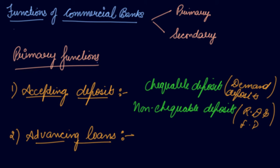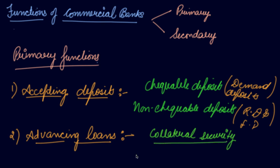The second primary function is advancing loans. If you need any kind of loan, you go to the bank, apply for the loan, and after verification the bank approves it and gives you the money on interest. Banks advance loans mostly for productive purposes on approved security — you have to give collateral. The amount of the loan is generally less than the value of the security. For example, if you take a loan of 5 lakh, the security will be approximately 7 lakh.